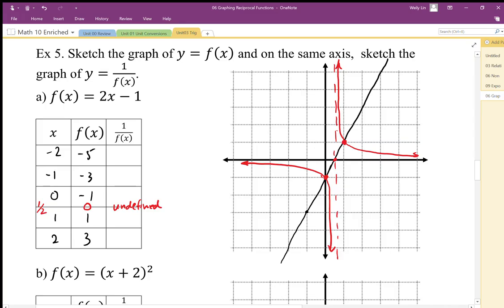Okay, so there's our function. We can plot a couple points here. This is going to be negative 1 fifth, negative 1 third, 1.